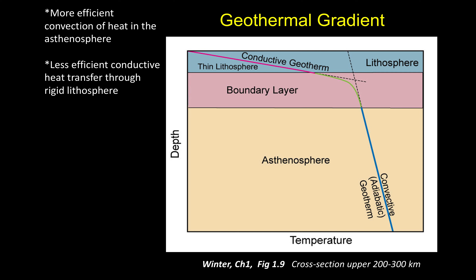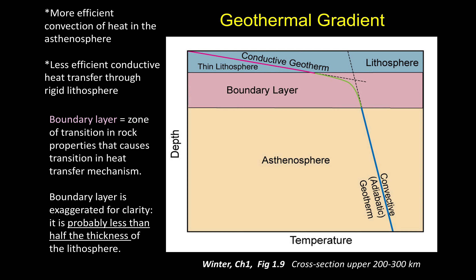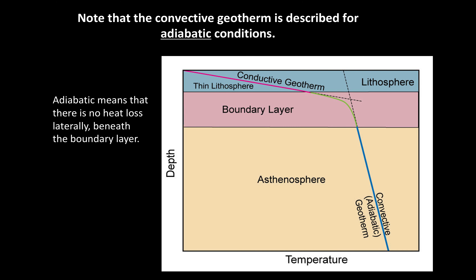The boundary layer has been exaggerated here and in fact it should probably only be about half the thickness of the blue box. This transition is basically the transition between the lithospheric plate that can move as a single entity, whereas the asthenosphere is moving separately from the plate.